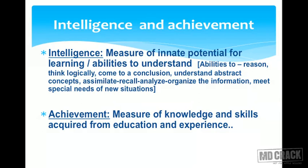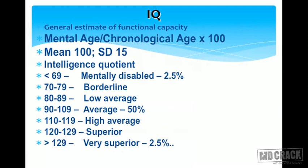Whereas achievement is the measure of knowledge and skills acquired from education and experience — so these are two different issues. One important measure of intelligence is the intelligent quotient, or IQ. It's a general estimate of the functional capacity of the brain, calculated as mental age divided by chronological age, multiplied by 100.